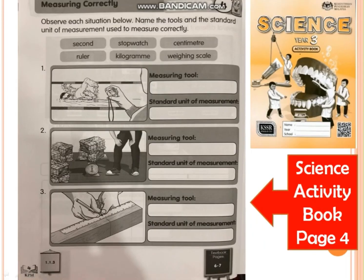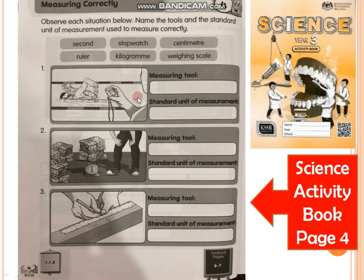Now we want to do an exercise. Let's take your science activity book. You have to do page 4. Write the date first. Observe each situation below. Name the tools and the standard unit of measurement. Choose the provided answers and write them in the correct box. Refer to the situation, then decide what measuring tool is used and what is the standard unit of measurement. Then go to number 2 and number 3.